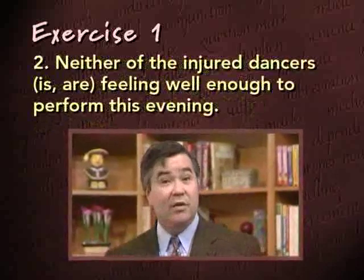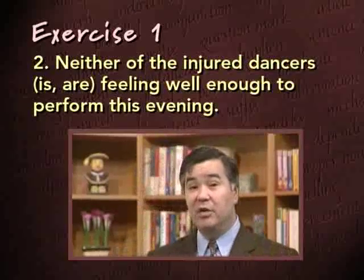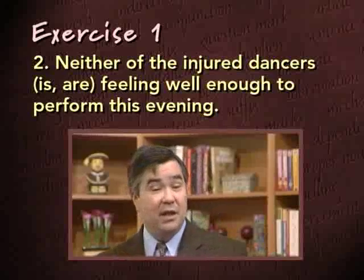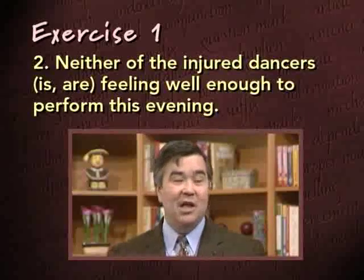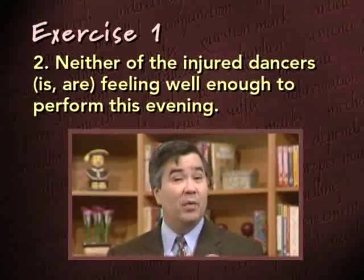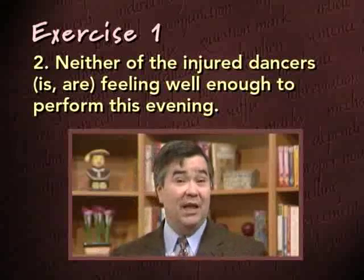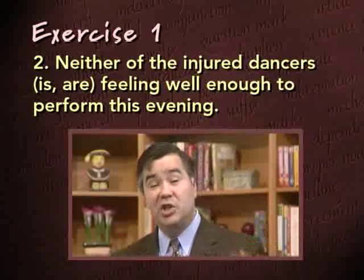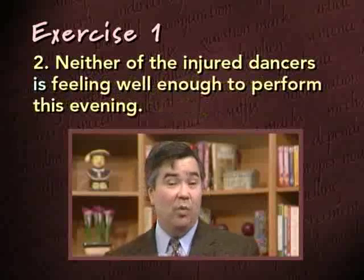Our next example: 'Neither of the injured dancers is — or are — feeling well enough to perform this evening.' Here we have a choice between the singular verb 'is' and the plural verb 'are.' The subject is 'neither,' and you might recall that 'neither' is one of the indefinite pronouns that is always singular. When we say 'neither of the dancers,' we mean each one of them, one at a time — considering each individually. Since we're talking about each of the dancers one at a time, it should be considered singular, and the singular verb 'is' would be correct in this sentence.